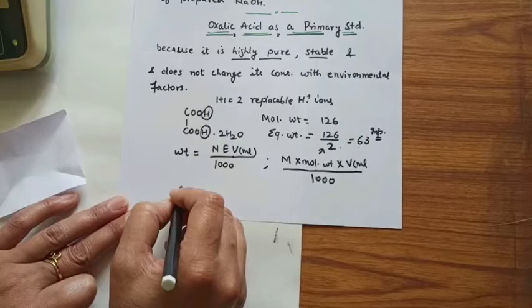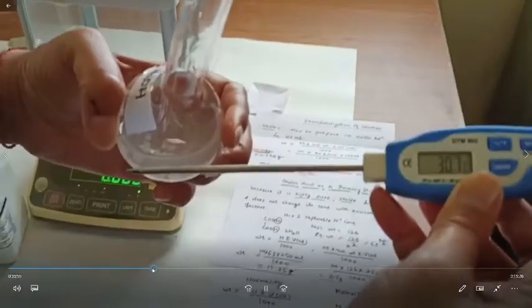One more thing to note: Molarity = n × N, where small n is the N-factor and capital N is normality. Since the N-factor here is equal to 1, molarity is equal to normality.